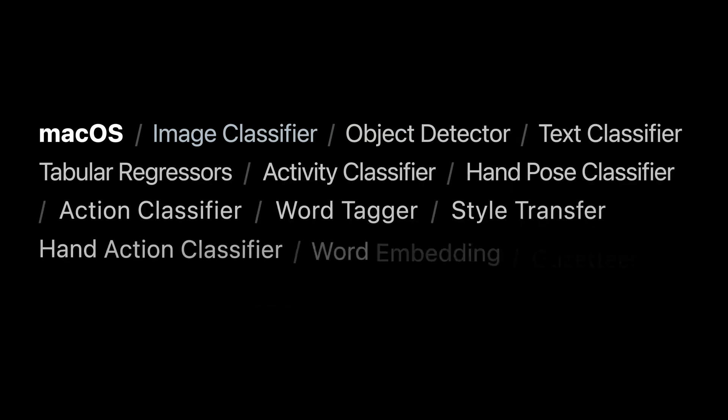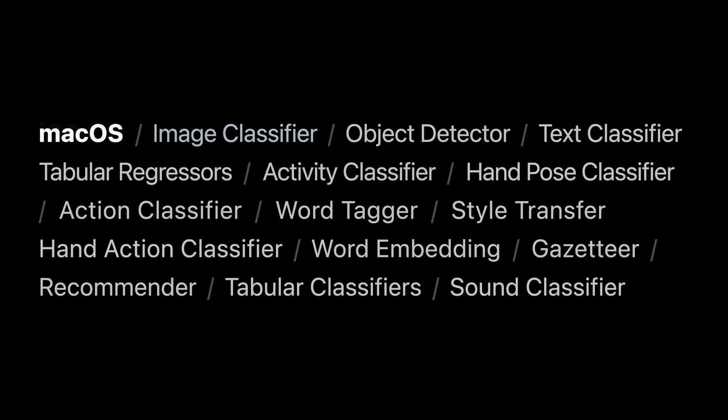Now, let's dive in. There are different tasks available in CreateML — here are the ones available on macOS, and these are the ones now available on iOS. Among them are popular tasks such as image, sound, and text classifiers. More recently added ones include style transfer, as well as this year's new addition of hand pose and hand action classifiers.